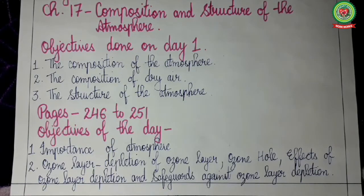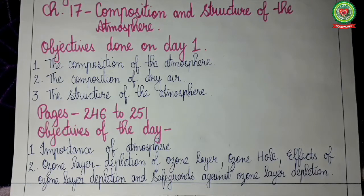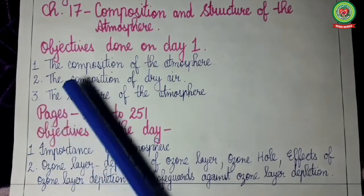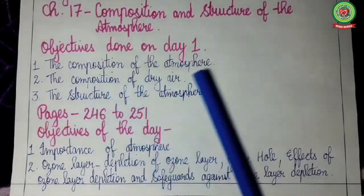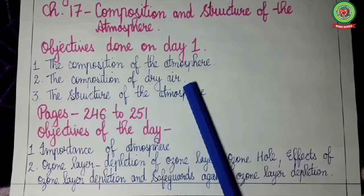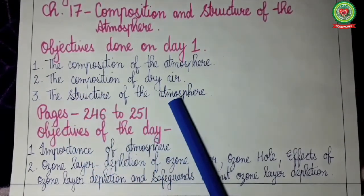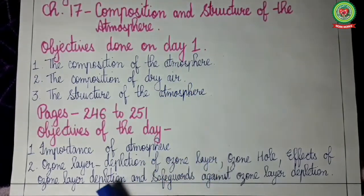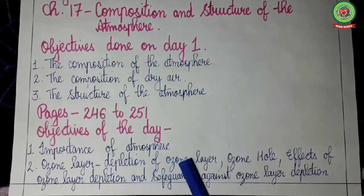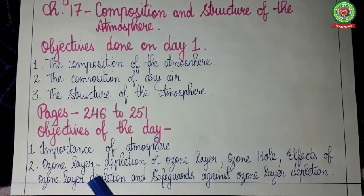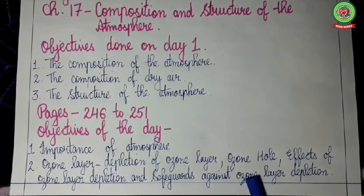With this we complete our today's topic. Let us see the objectives we have done on day 1 and day 2. We discussed the composition of the atmosphere, the composition of dry air, the structure of atmosphere in the last class. Today we discussed about importance of atmosphere, ozone layer depletion, ozone hole, effects of ozone layer depletion and the safeguards against ozone layer depletion.